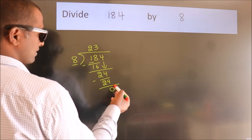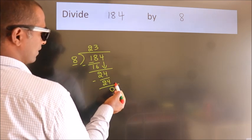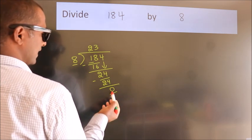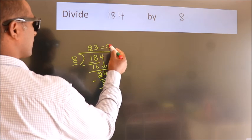After this, no more numbers to bring down. And we got remainder 0. So this is our quotient.